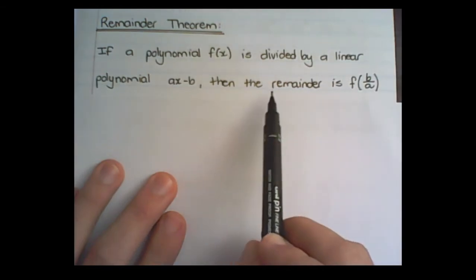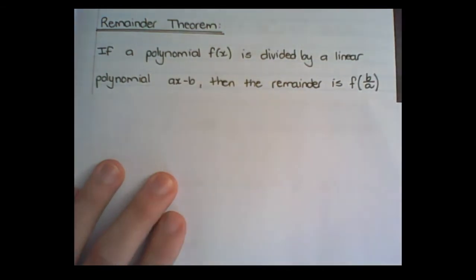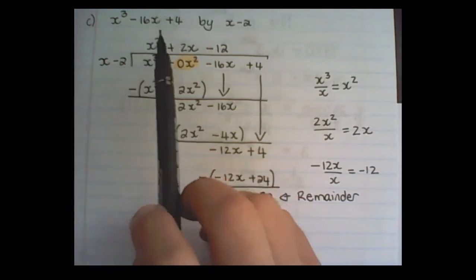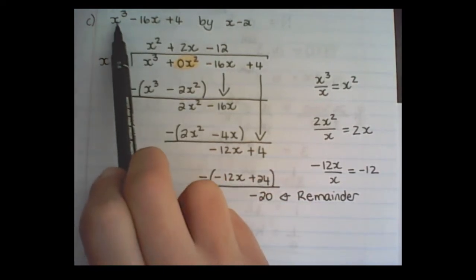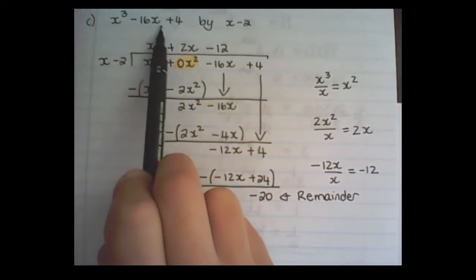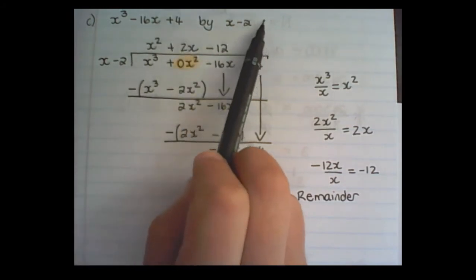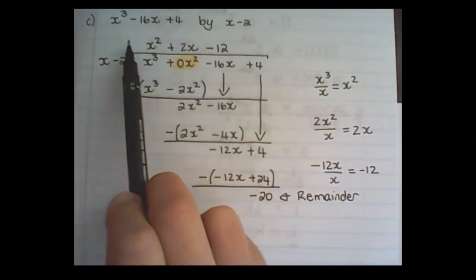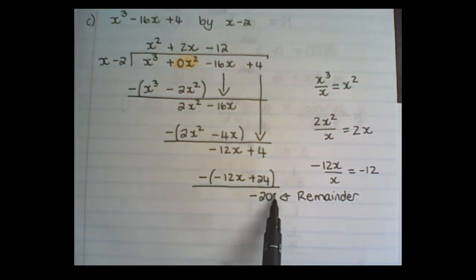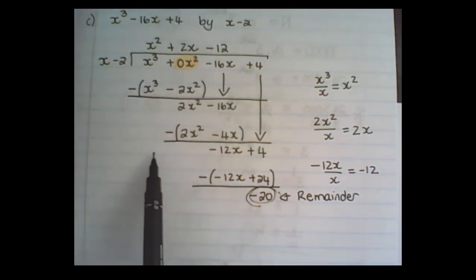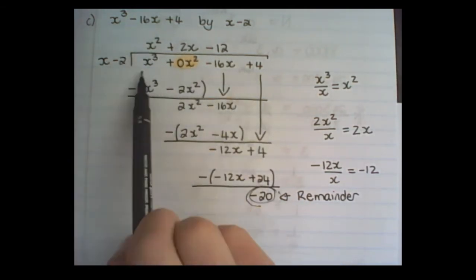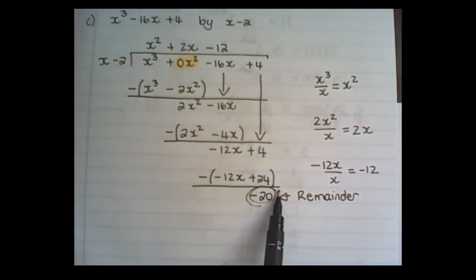So let us speak about what it means to have a remainder. In the previous video, we divided x to the power of 3 minus 16x plus 4 by x minus 2, and we used long division. What we found at the end here is this remainder. Now, what the remainder theorem says is we can find the value of this remainder without doing all of the long division. We can skip all of this and go directly to the remainder.